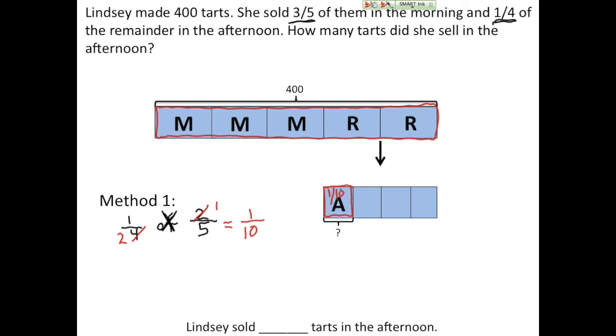But now I want to know how many tarts is one-tenth. So I'm going to need to find, this was my first step, now I'm going to need to find one-tenth of, which means times, four-hundred, which is all of the tarts that she had. Now I can cross-cancel, both can be divided by ten.